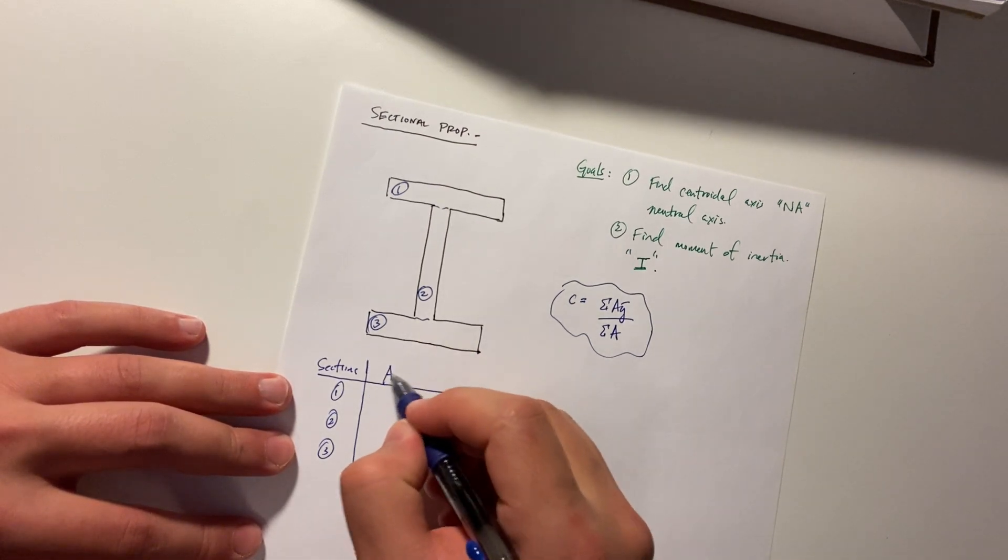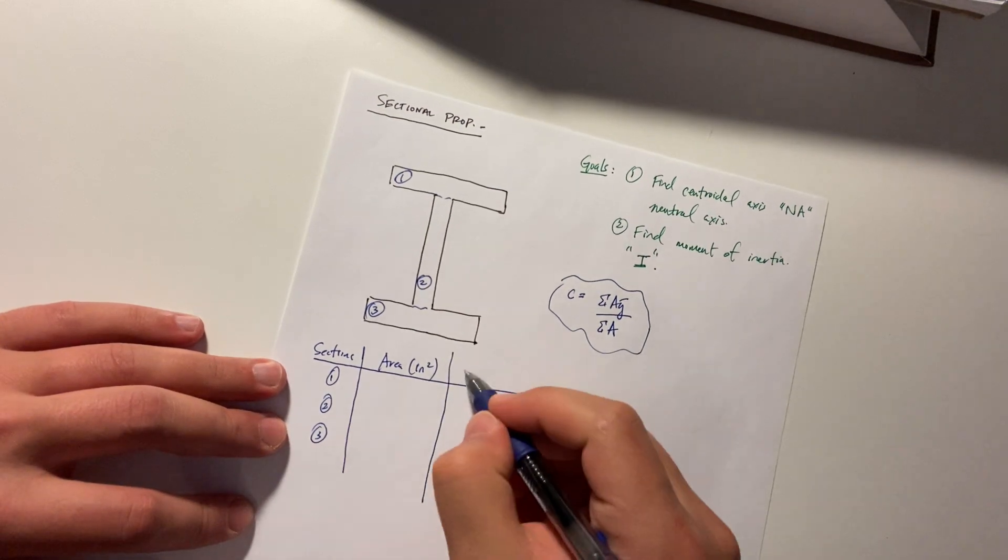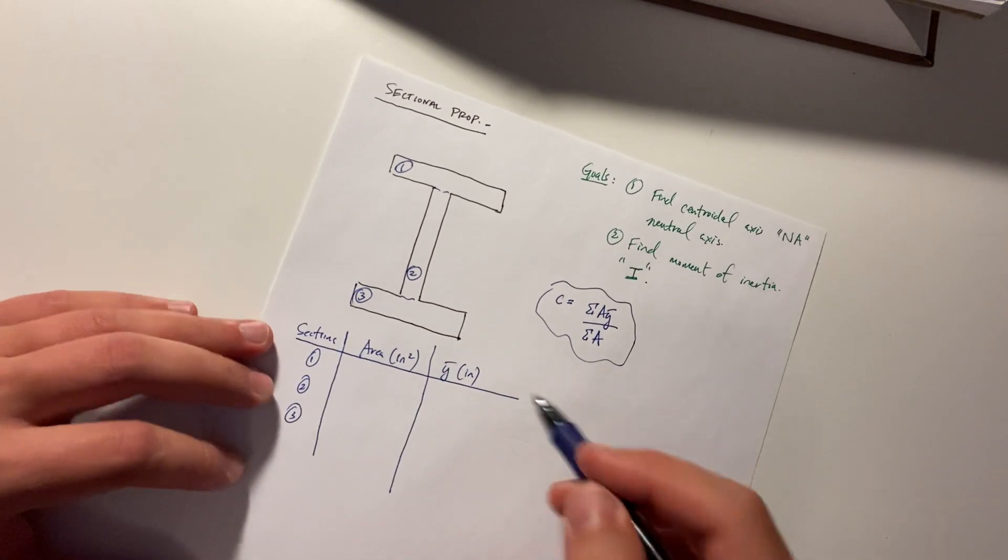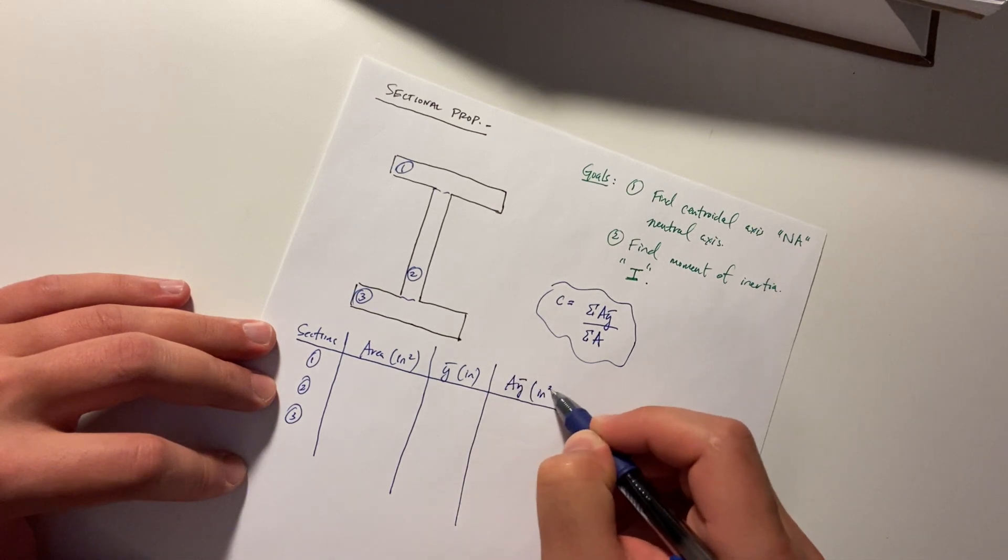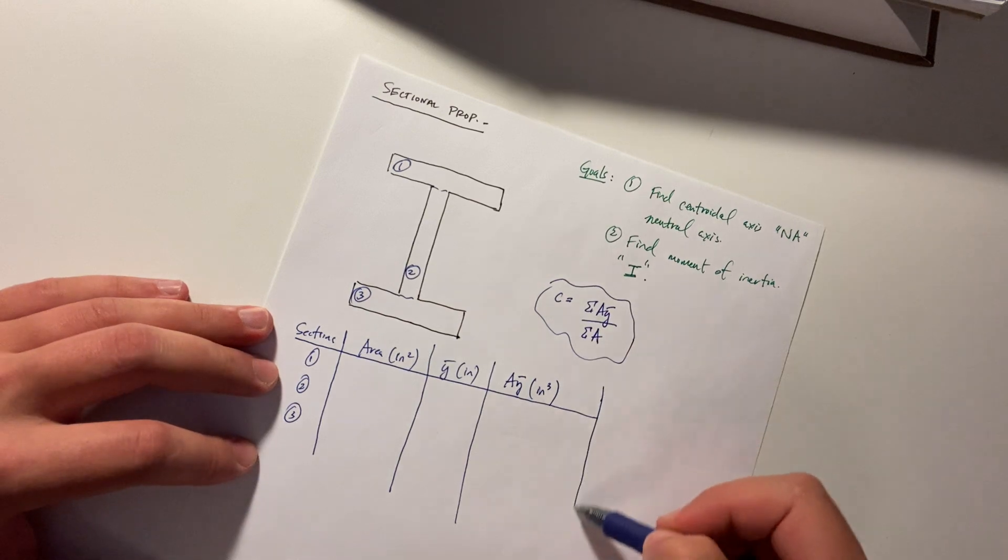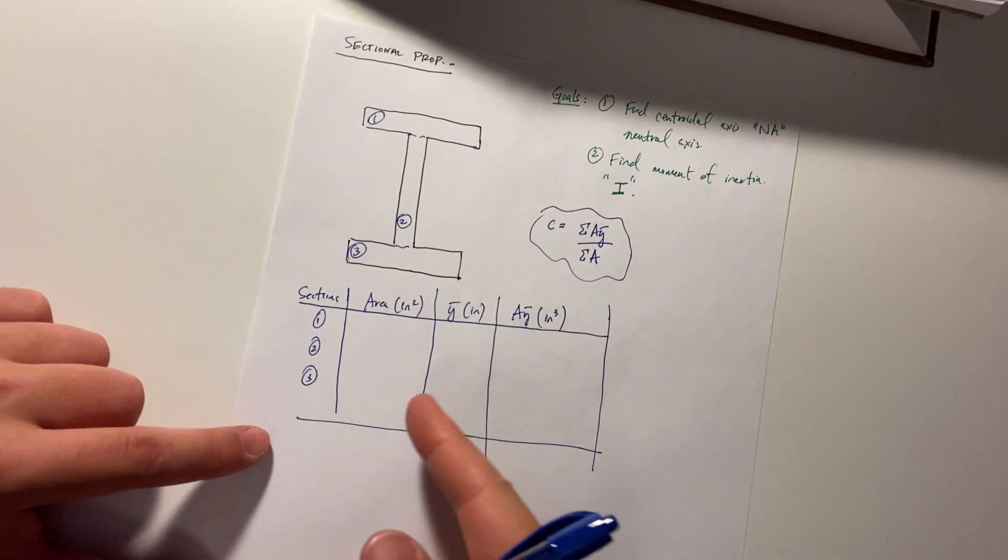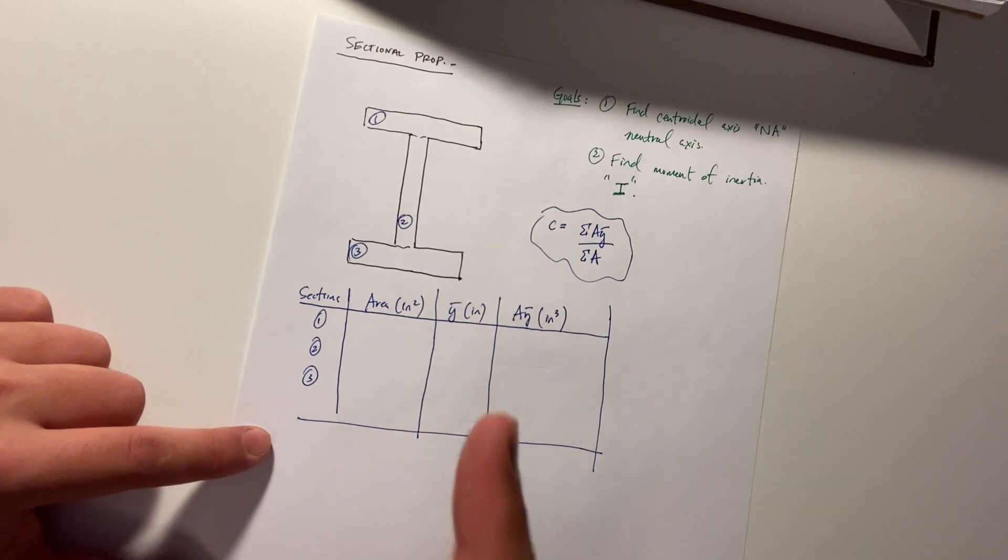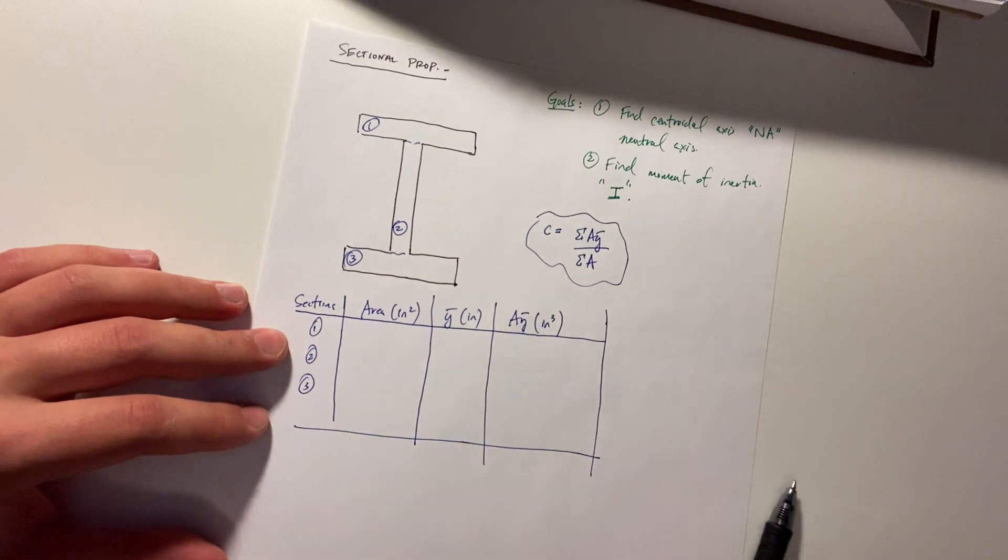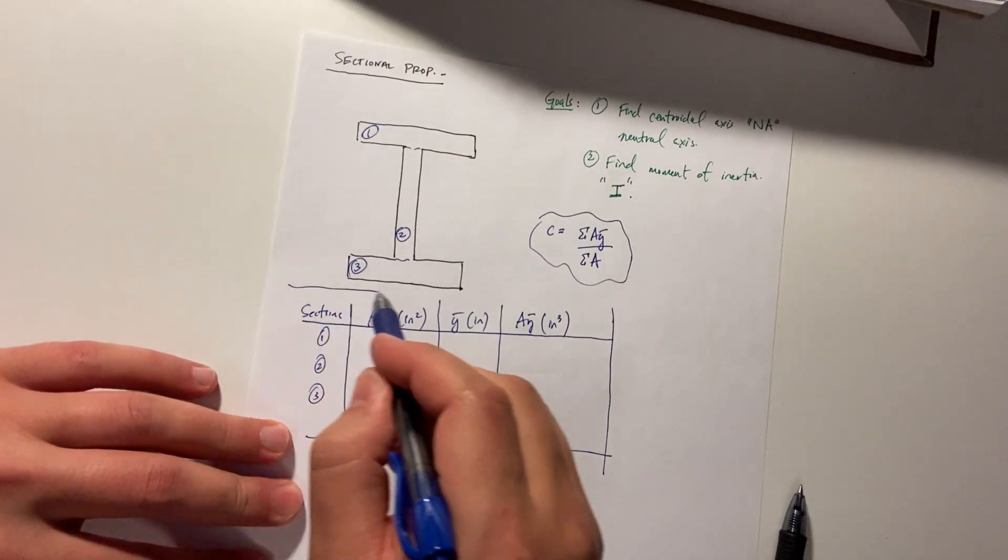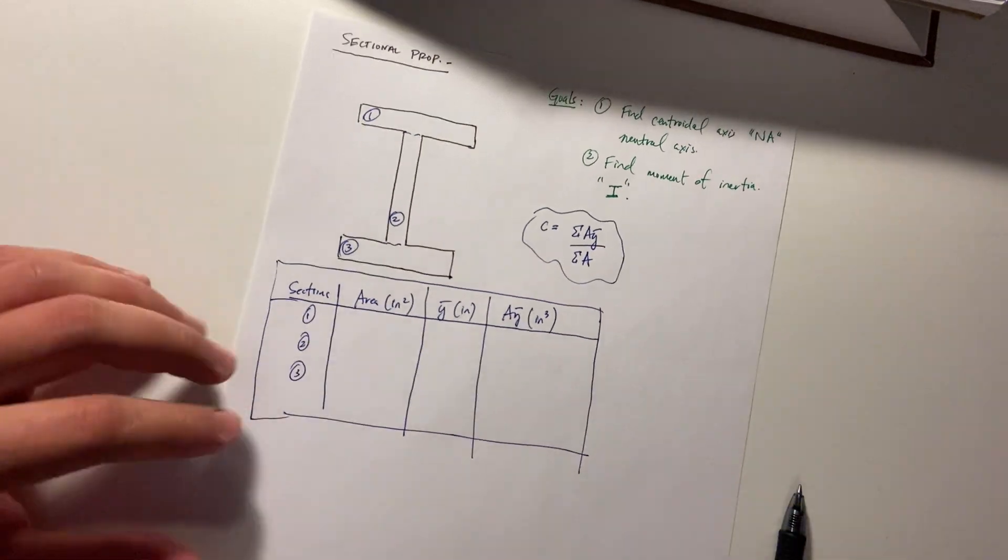Make a little table for myself. Section one, section two, section three. I am going to make an area, which is inches squared, a Y bar, which is going to be in inches, and an AY bar, which is going to be in inches cubed. It's a box now, right?